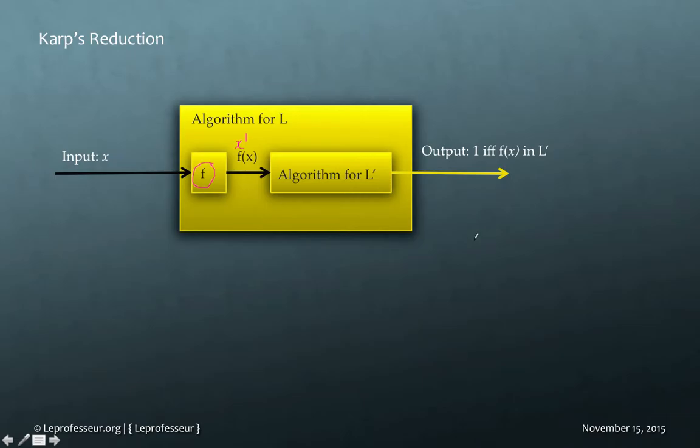In a simple sense, reduction is just basically converting one problem description into another form of the same problem, but in a different form, which can be solved by a Turing machine. This can be solved by a Turing machine M.